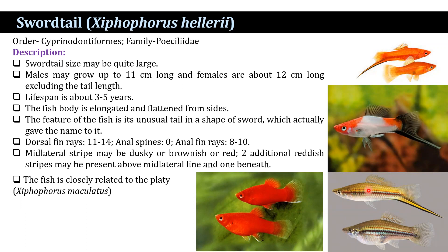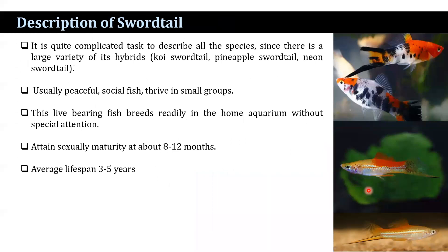For the fish coloring, it is difficult to identify just one pattern, though red with black tail seems to be the most common one. It is quite a complicated task to describe all the species, since there is a large variety of hybrids, such as the koi hybrid, the pineapple hybrid, and the neon swordtail.